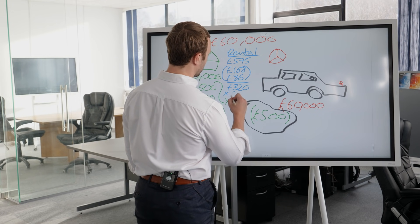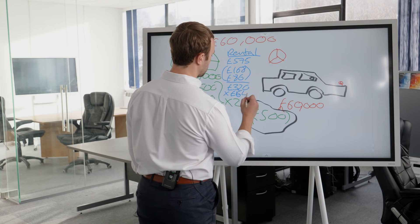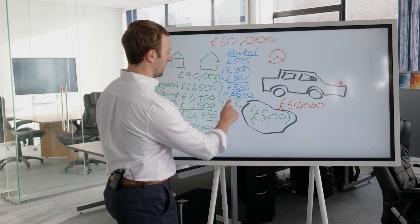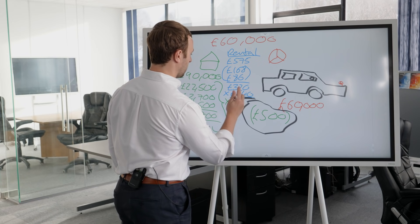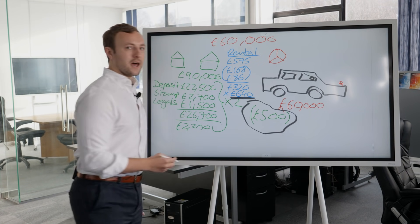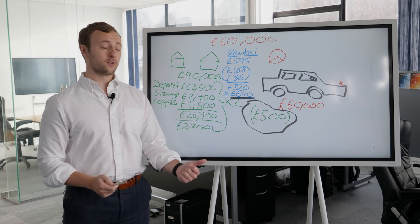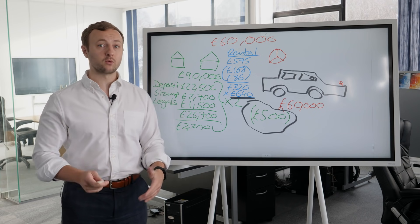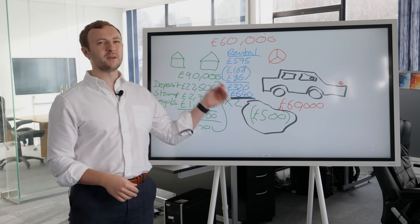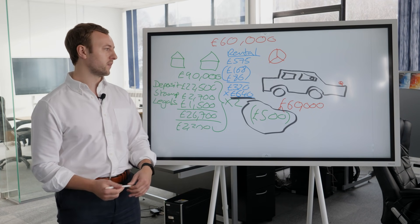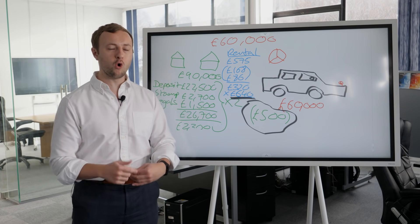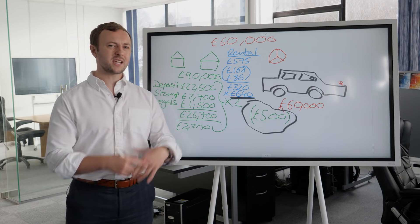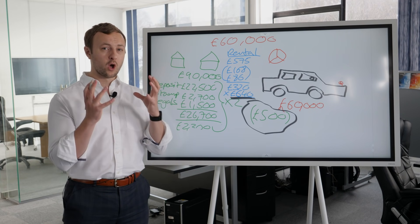Times two properties, that's 640 pounds per month net. We need 500 pounds a month to cover the car lease, so we've got an extra 140 pounds, which is good because there will be additional property costs from time to time. But as a general overview, you've more than covered that 500-pound car payment — and that's a completely different way of looking at it.